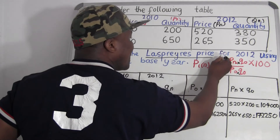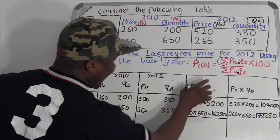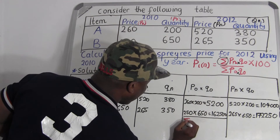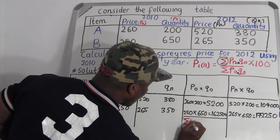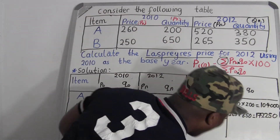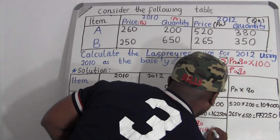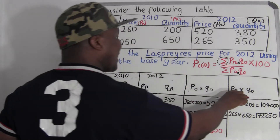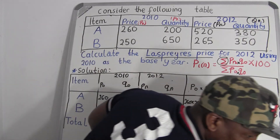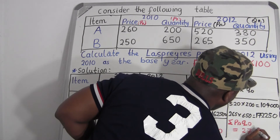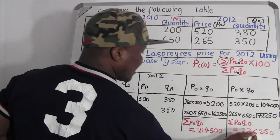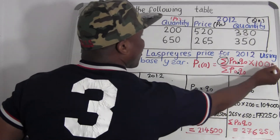Now we get the sum. Take all the p₀q₀ values and add them together: 52,000 plus 162,500 equals 214,500. That's the sum of p₀q₀. Then the sum of pₙq₀: 104,000 plus 172,250 equals 276,250. We have both sums, and now we multiply by 100.